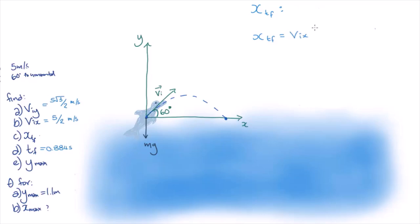we just need to multiply the horizontal velocity, vix, by the time spent in the air, tf. If we plug in our previous values, this comes out to 2.21 meters.